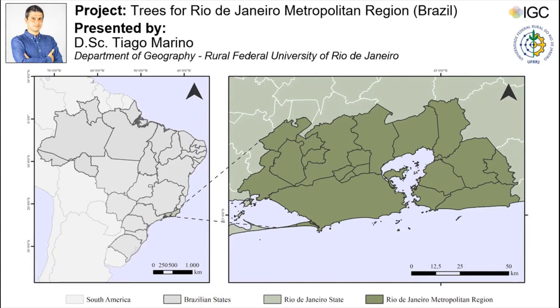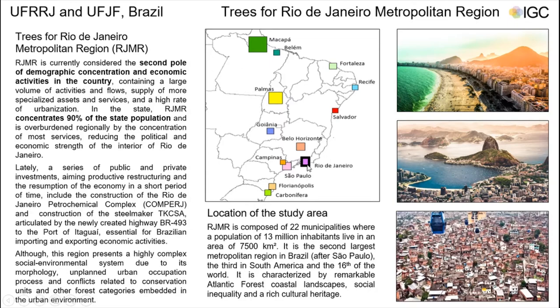Hi, my name is Tiago Marino. I am professor at the Department of Geography at the Rural Federal University of Rio de Janeiro, and I will present the project Trees for Rio de Janeiro Metropolitan Region, which is part of the project Trees for Brazil, presented by Ana Clara Moura from the Federal University of Minas Gerais. Here we briefly present the study area, Rio de Janeiro Metropolitan Region, which is the second pool of demographic concentration and economic activities in the country, and it concentrates 90% of the state population.